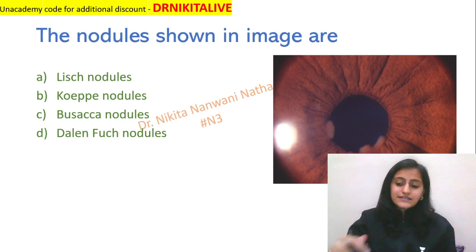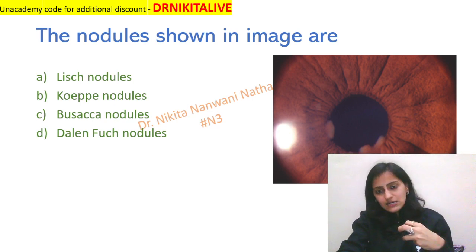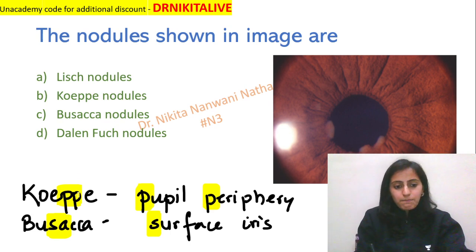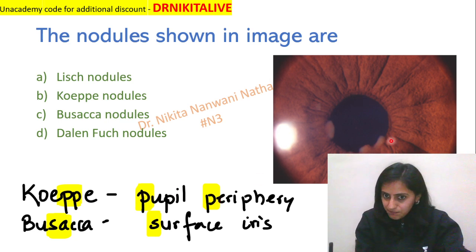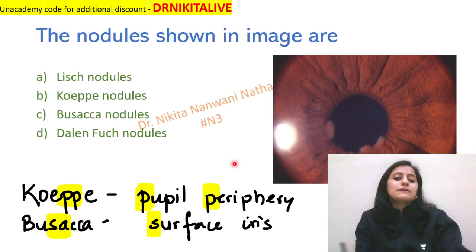So the mnemonic to remember this — we basically get confused between Coppase and Basakas. Remember, Coppase nodules: Coppase has double P, that is PP, so it's at the pupil periphery. So this is the pupil, and at the periphery — that is the pupil periphery — is where we have Coppase nodules.